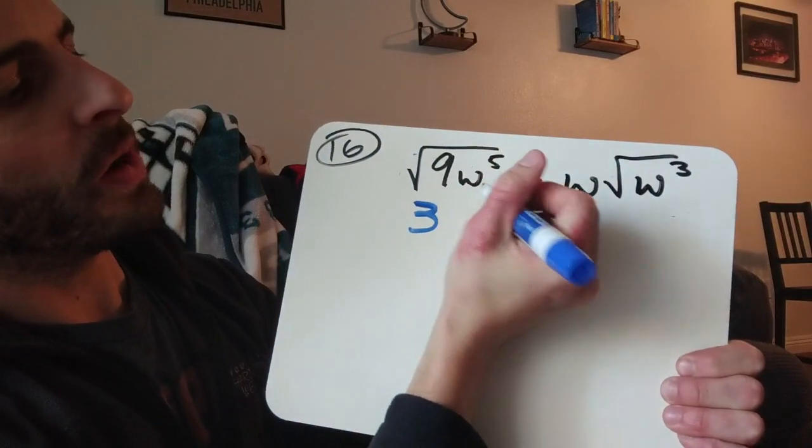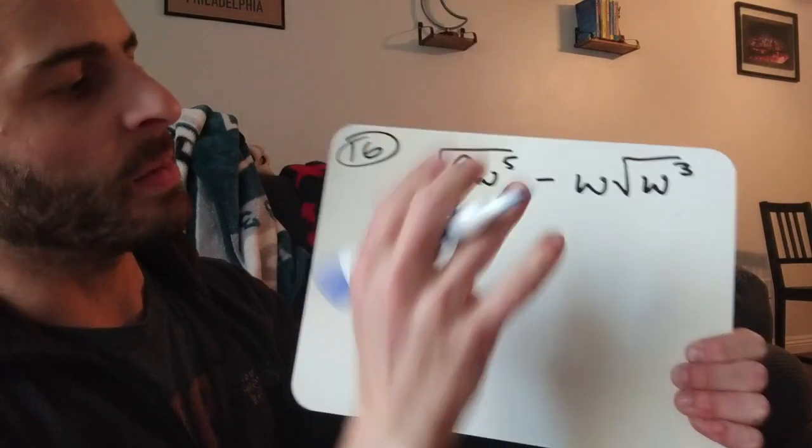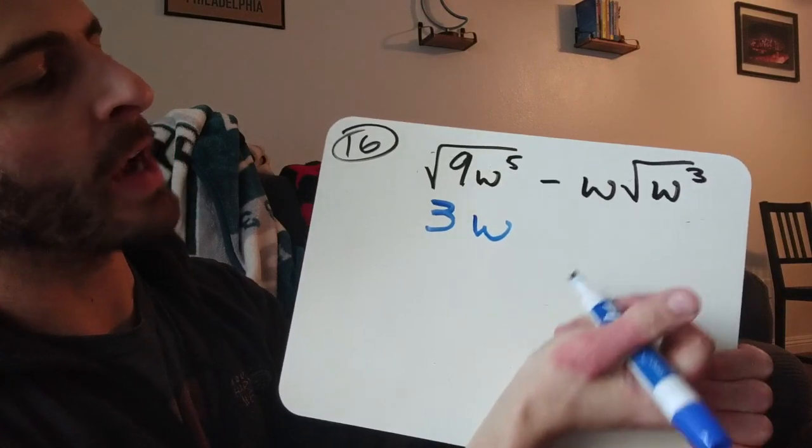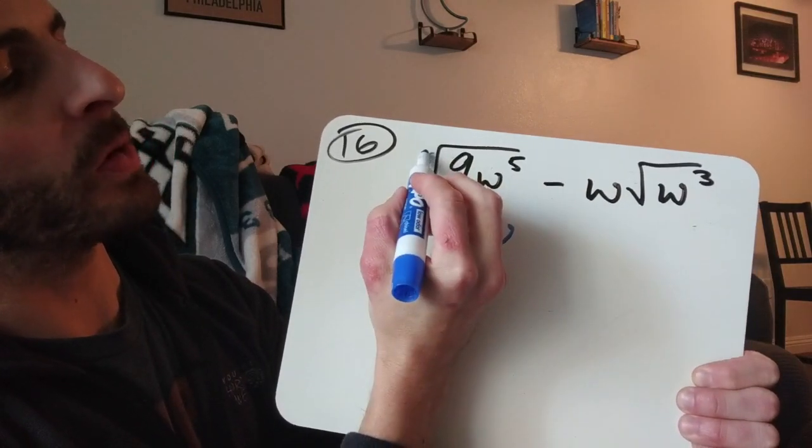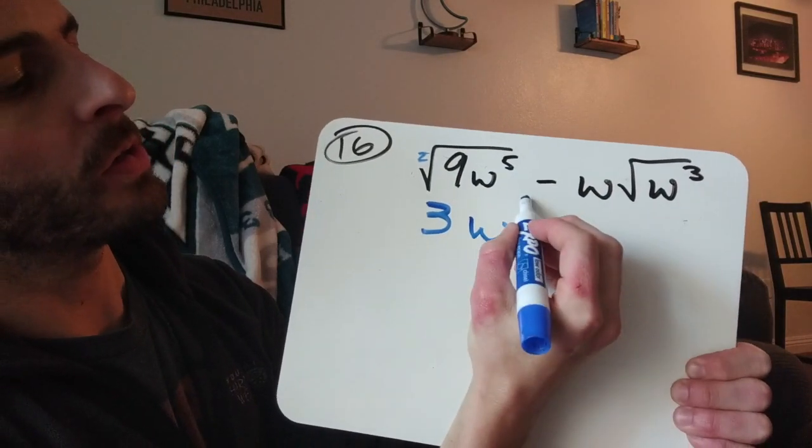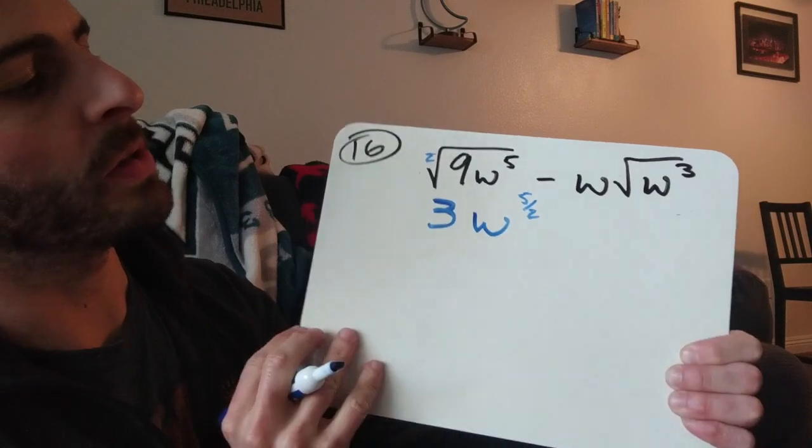Now I don't know the square root of w to the 5th. I could simplify it or whatever, but I'm going to first move it to a rational exponent. So remember, square root is a 2 in the root, so the 5 is the numerator, the 2 is the denominator.